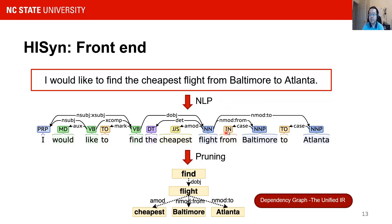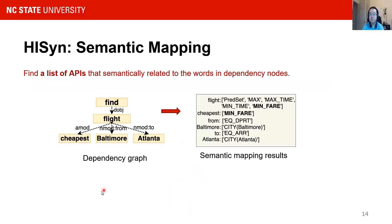The parsing result contains many important syntactic and semantic pieces of information, such as part of speech, dependency relations, and named entities. We then prune out unimportant words such as pronouns or auxiliaries, and leave the main information inside a tree structure called the dependency graph, which is the unified intermediate representation. This graph contains the most important key information in the query, and it will guide the synthesis process in the back-end. The dependency graph and the knowledge base are then taken as input to the back-end.